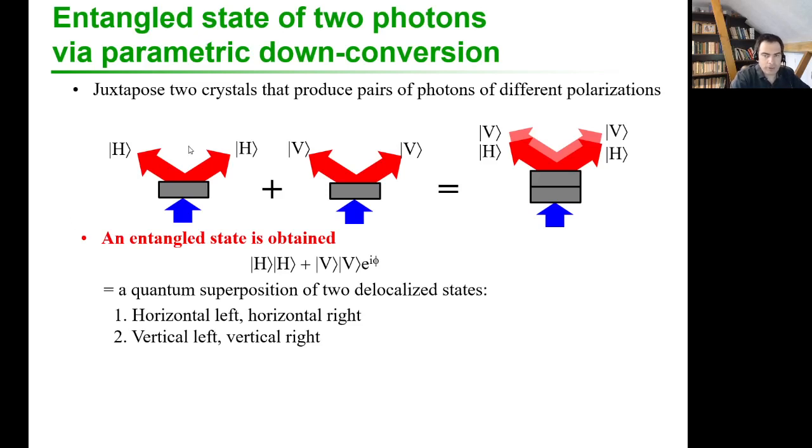In this video, I want to briefly tell you about how to make an entangled state. How can we create a situation where two photons are simultaneously horizontal with Alice and Bob or simultaneously vertical with Alice and Bob?